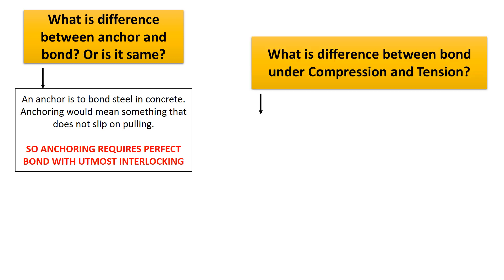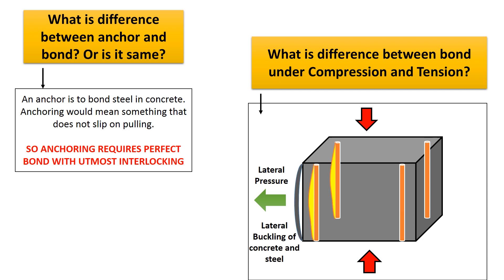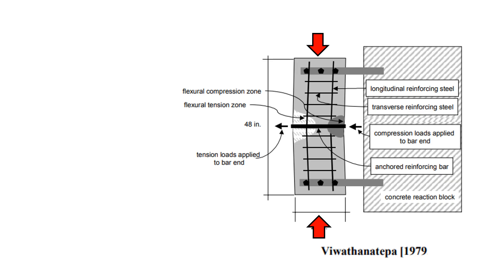Next comes the question: what is the difference between bond under compression and tension? When a compressive force acts on concrete, a lateral pressure develops on confining steel bars and on the longitudinal steel bars, and lateral buckling may also be initiated. The confining forces shown by black arrows exert reaction as circumferential compression near one end of the bond and circumferential tension on the other end. A perfect representation is the model by Vivathap Nepata in 1979, wherein he characterized bond as a compression load applied at the bar end and tension force at the other end of the anchored reinforcing bar. The column was under compression, so a flexural compression zone occurred on one side of the column face and a flexural tension zone on the other.